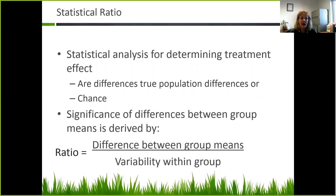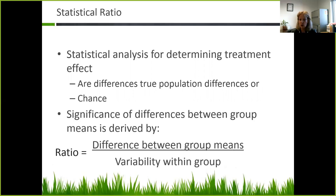The actual calculation of the statistic when comparing means involves statistical analysis for determining the treatment effect — are the differences true to population differences, or are they by chance alone? The significance of the differences between group means is derived by the ratio of differences between group means over the variability within the group.